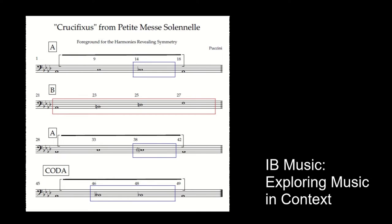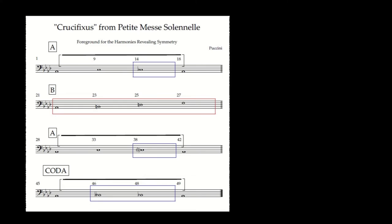This overview that you can see here shows the music divided into four sections — a very clear-cut ternary form. I'm going to focus on that B section, specifically in Puccini's Petite Messe Solemne, the Crucifixus movement.